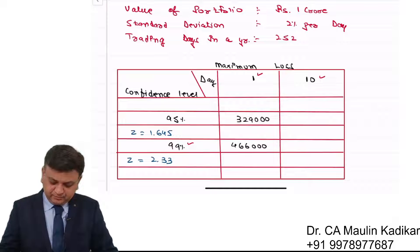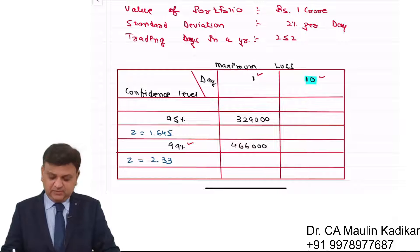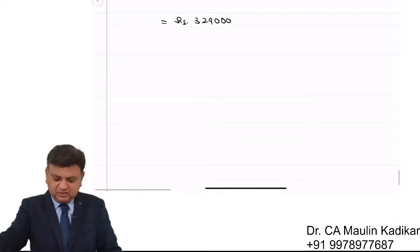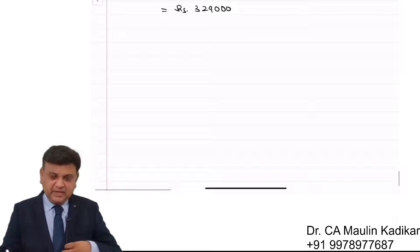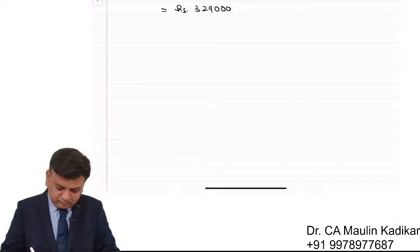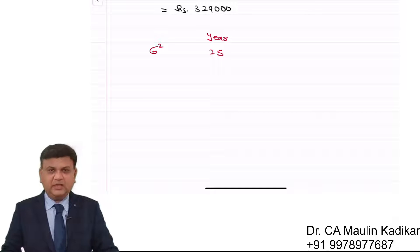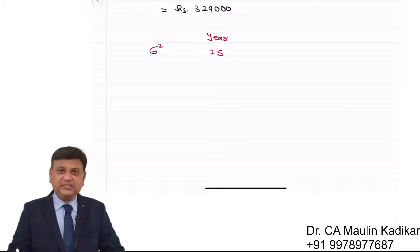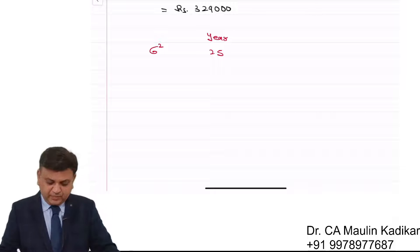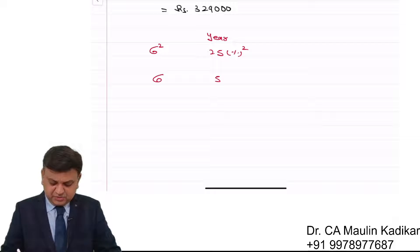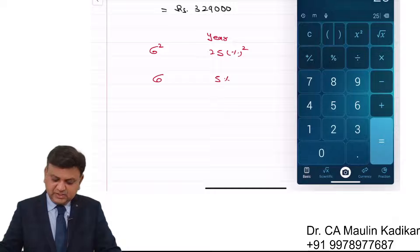Now let us have an understanding of how to make the calculation of VAR for 10 days. It is something like this: suppose the variance for the entire year is 25%. We have a return variance of 25%. Basically, the variance of return is 25%, so the standard deviation is 5%. We understand that it is the square root of 25.